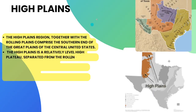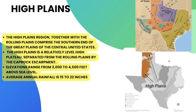The High Plains region, together with the Rolling Plains, comprises the southern end of the Great Plains of the central United States. The High Plains is a relatively level, high plateau separated from the Rolling Plains by the Caprock Escarpment. Elevations range from 3,000 to 4,500 feet above sea level, and average annual rainfall is 15 to 22 inches — rainfall continues to decrease and elevations rise as you move into this part of the panhandle.